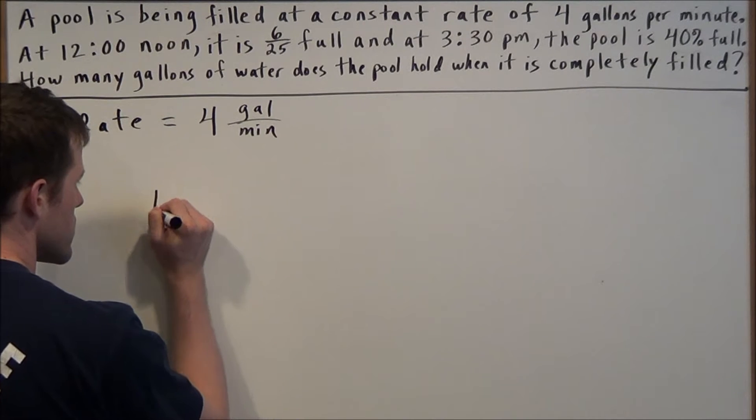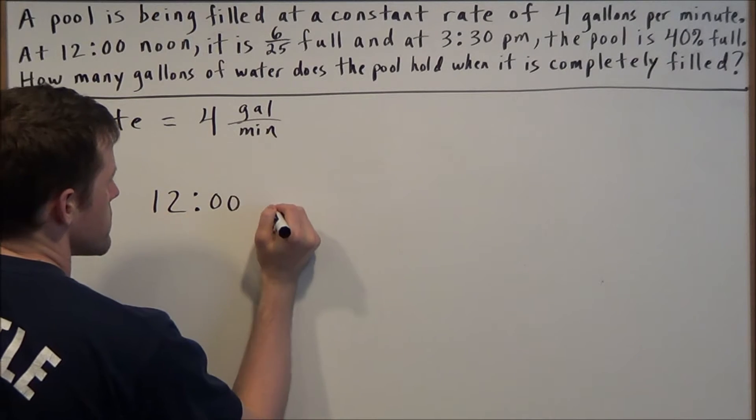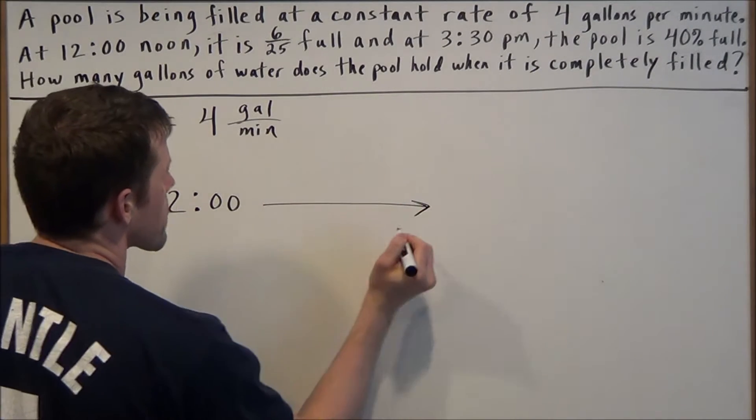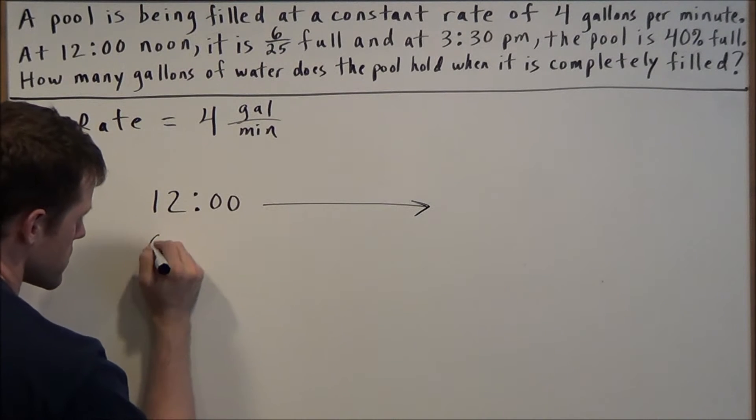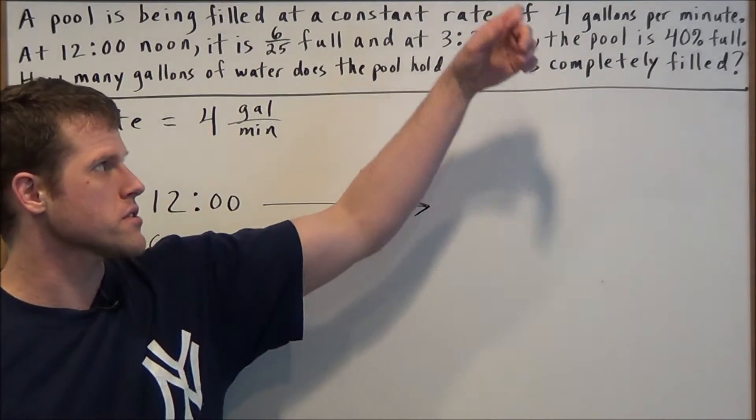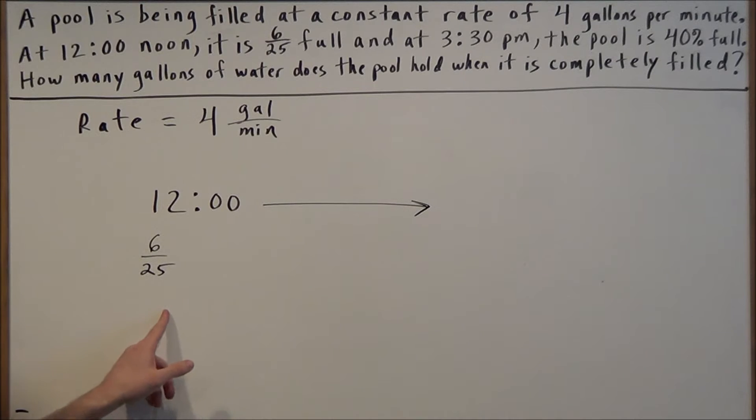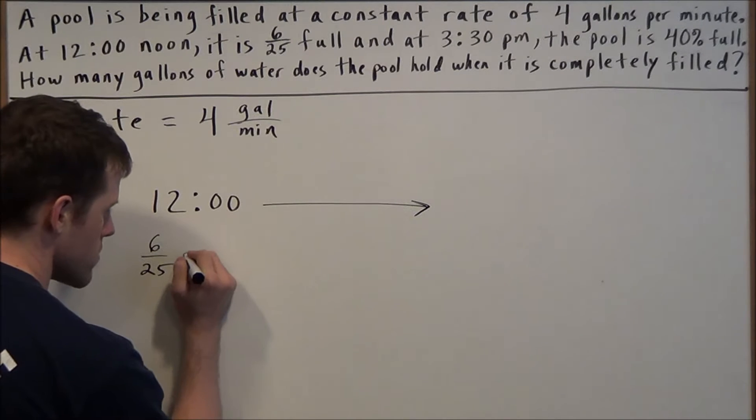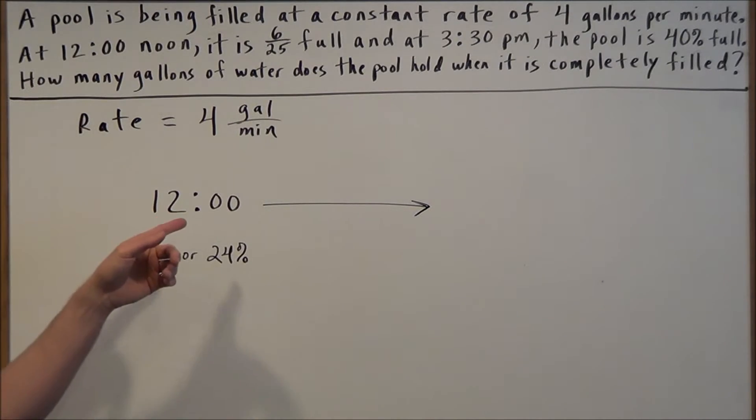At 12 o'clock noon the pool is 6/25 full. But since the next piece of information is at 3:30 the pool is 40% full, we should convert this to a percent. This is easy to convert—you just multiply the top and bottom by four, and this will tell you that the pool is 24% full at 12 o'clock.